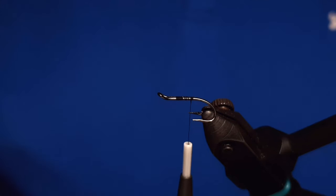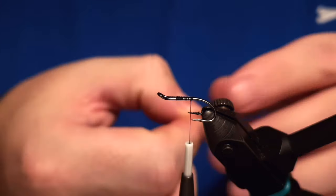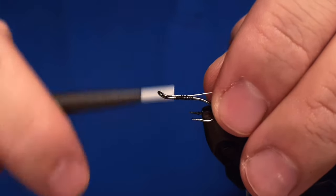It's a relatively simple fly to tie but really effective when it comes to salmon fishing. So we'll start by attaching the thread to this double hook which we are using.